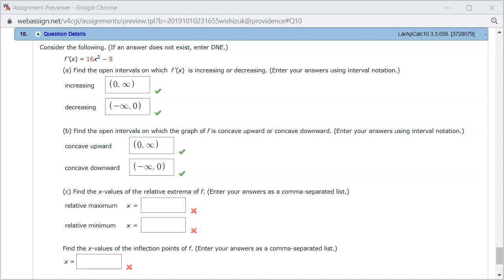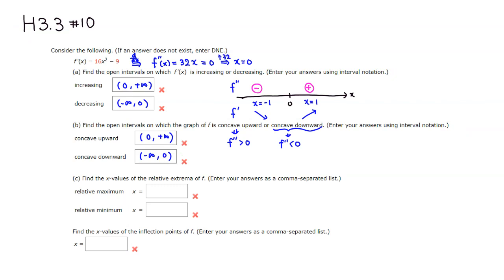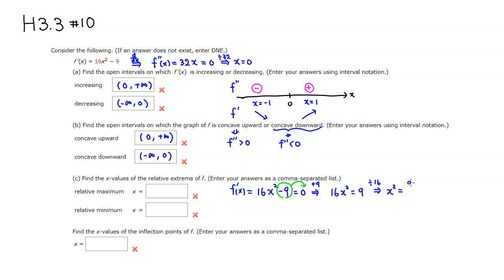Let's do part C: find the x values of the relative extrema of f. To find relative extrema, we need the critical numbers. We look at the first derivative, which was given as 16x squared minus 9, and set that equal to 0. Adding 9 to both sides: 16x squared equals 9.